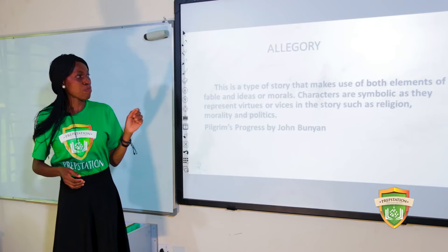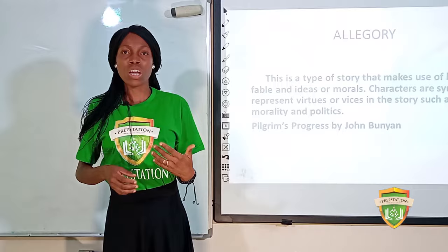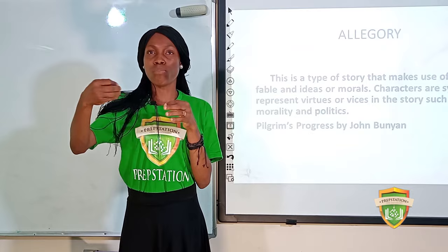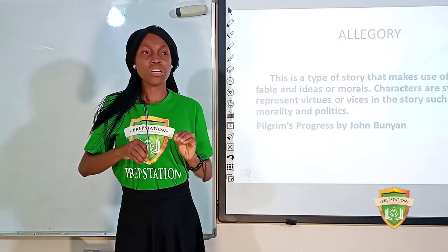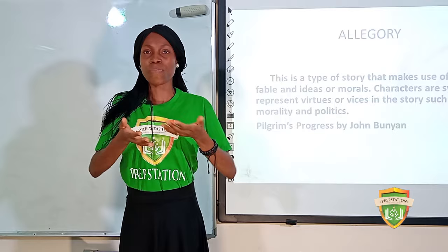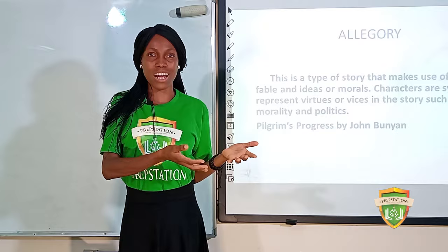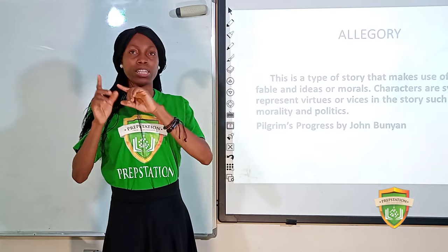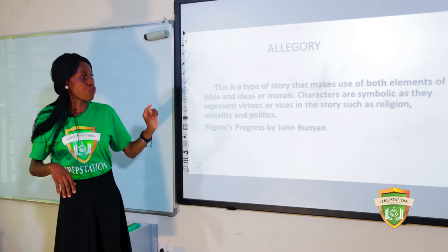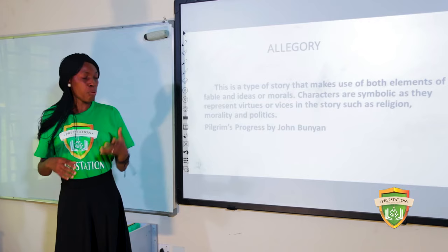An allegory is a type of story that makes use of elements of fable combined with ideas or morals. Writers use animals or characters with moral names such as Purity, Slothful, Greed, or Pride — symbolic characters representing virtues or vices in themes like religion, morality, and politics. A typical example is The Pilgrim's Progress by John Bunyan.